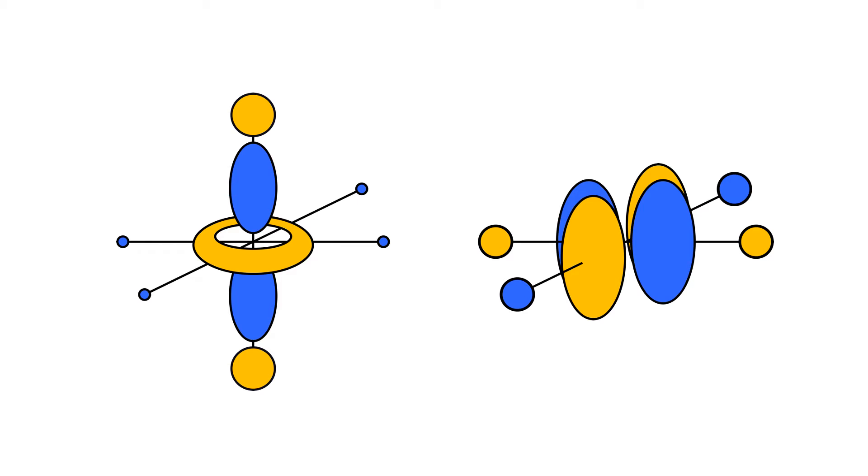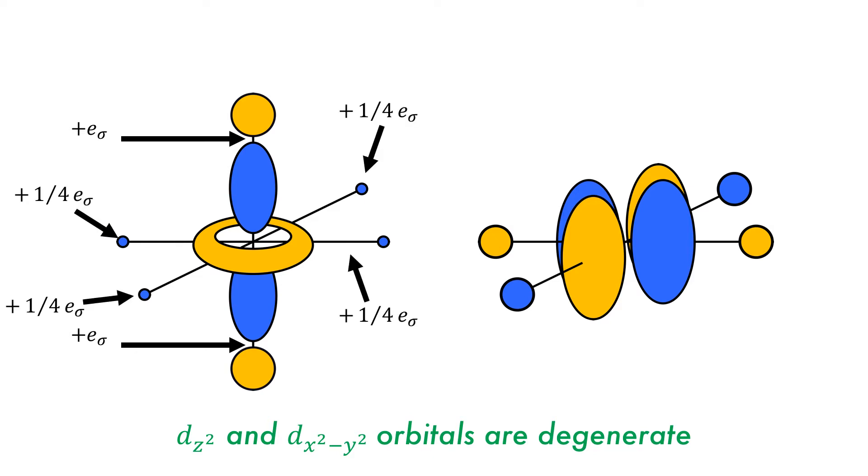For an octahedral complex, there are two d-orbitals that are metal-ligand antibonding: dz-squared and dx-squared minus y-squared, which are degenerate with exactly the same energy by symmetry. The bonding of the dz-squared along the z-axis is treated as minus e-sigma in both directions, and the equatorial groups are minus a quarter e-sigma.